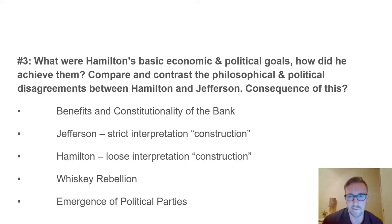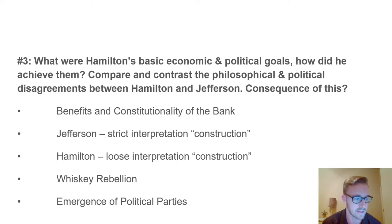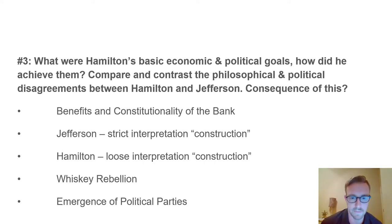Hamilton countered that he found constitutional authority for a national bank in Article 1, Section 8—the necessary and proper clause, also known as the elastic clause because it can be stretched. It reads: 'Congress shall have the power to make all laws which shall be necessary and proper for carrying into execution the foregoing powers and all other powers vested in this Constitution.' Hamilton argued that since Congress has the commerce clause, a national bank to handle interstate commerce was necessary and proper. Hamilton won out and the national bank was created.